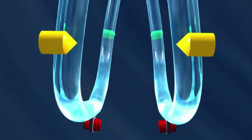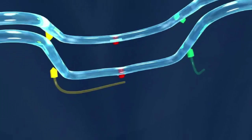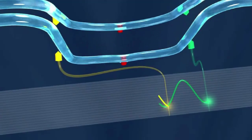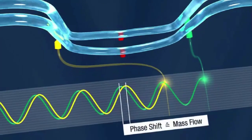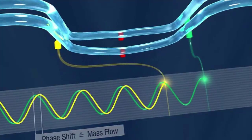This deformation is registered by two sensors and forms the basis of the measuring result. A phase shift occurs between the first and the second sensor. The mass flow rate is derived from this phase difference.